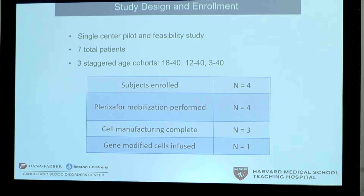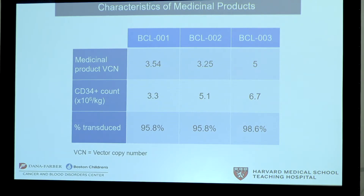So far, we have four subjects enrolled. All four of those subjects have undergone peripheral stem cell mobilization and apheresis. Manufacturing has completed in three of the patients and the fourth is well underway. We have treated one patient by infusing gene-modified cells with a follow-up of over six months. Characteristics of the manufactured medicinal products are shown here. The vector copy number or VCN ranges from 3.3 to 5 copies per cell, suggesting excellent transduction efficiency. The cell dose in CD34 cells times 10 to the 6 per kilo ranges from 3.3 to 6.7, and in all of the products, over 95% of the cells are transduced.